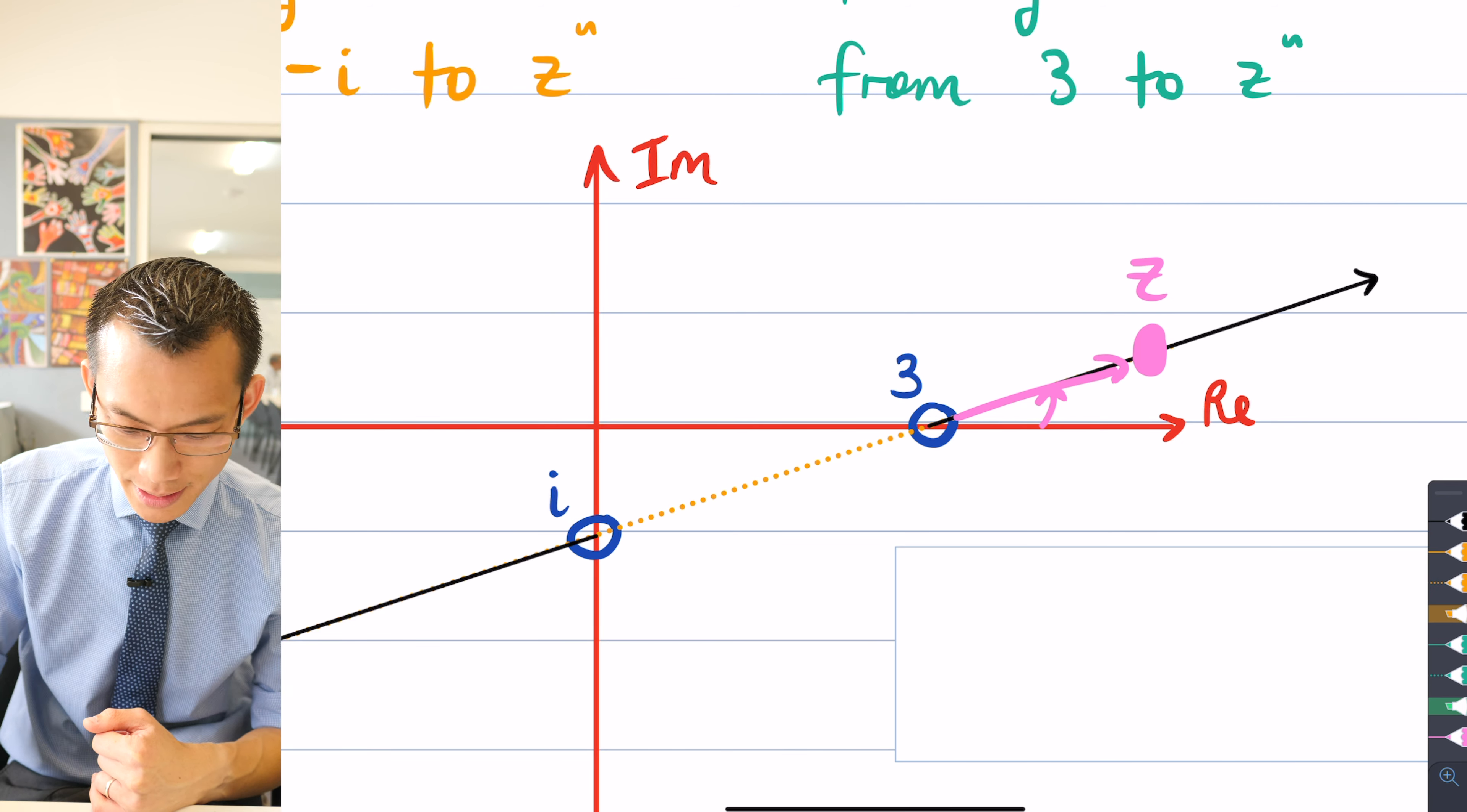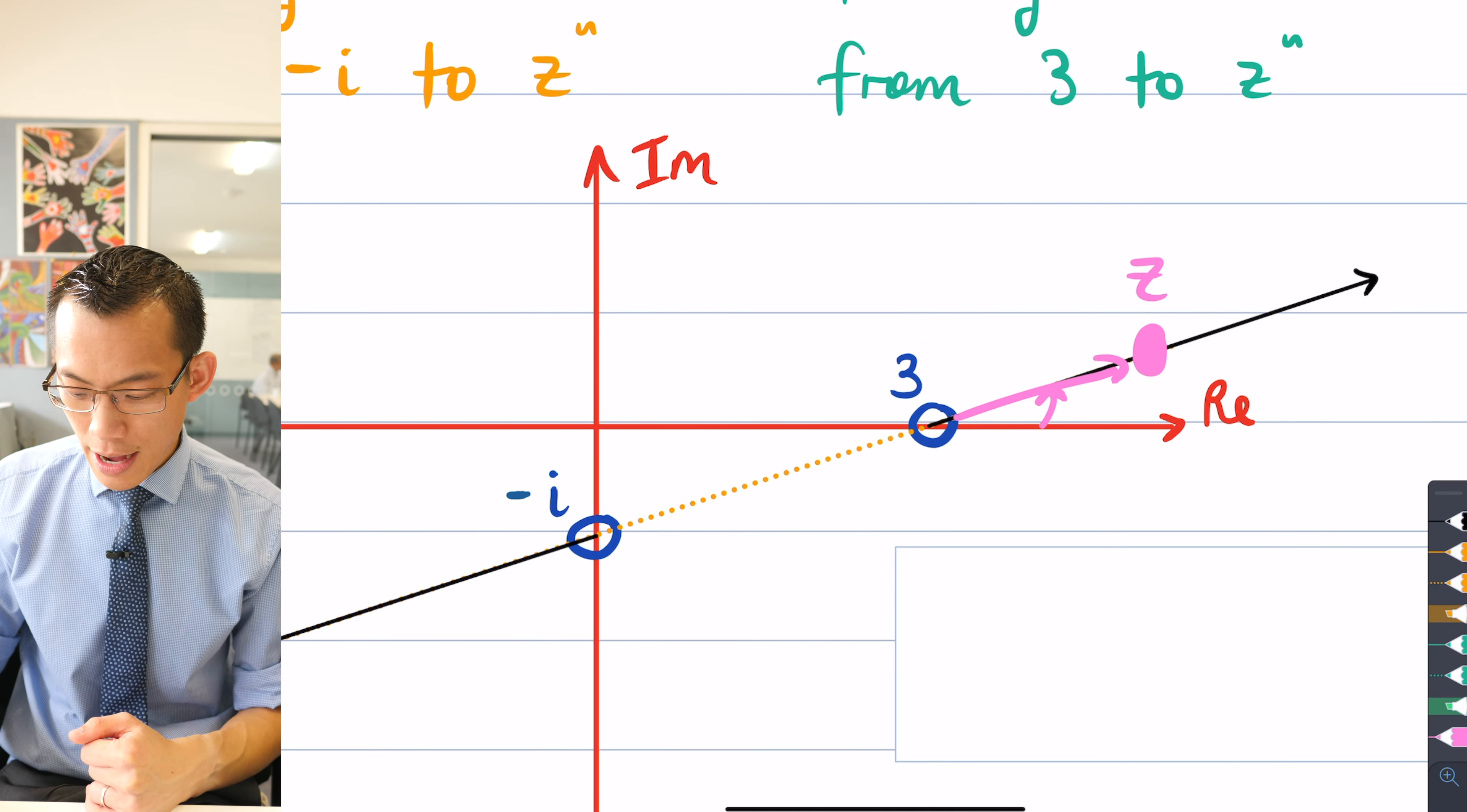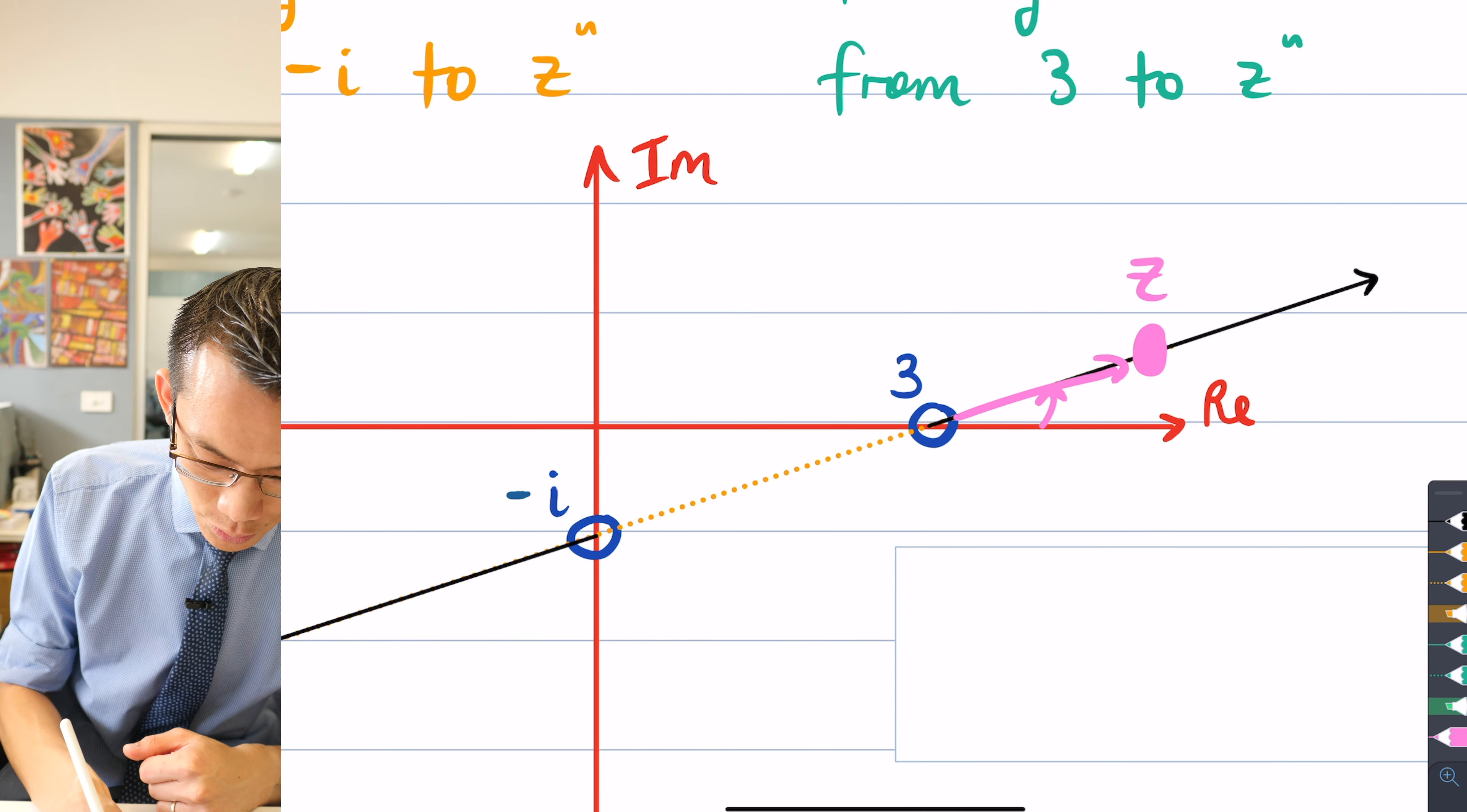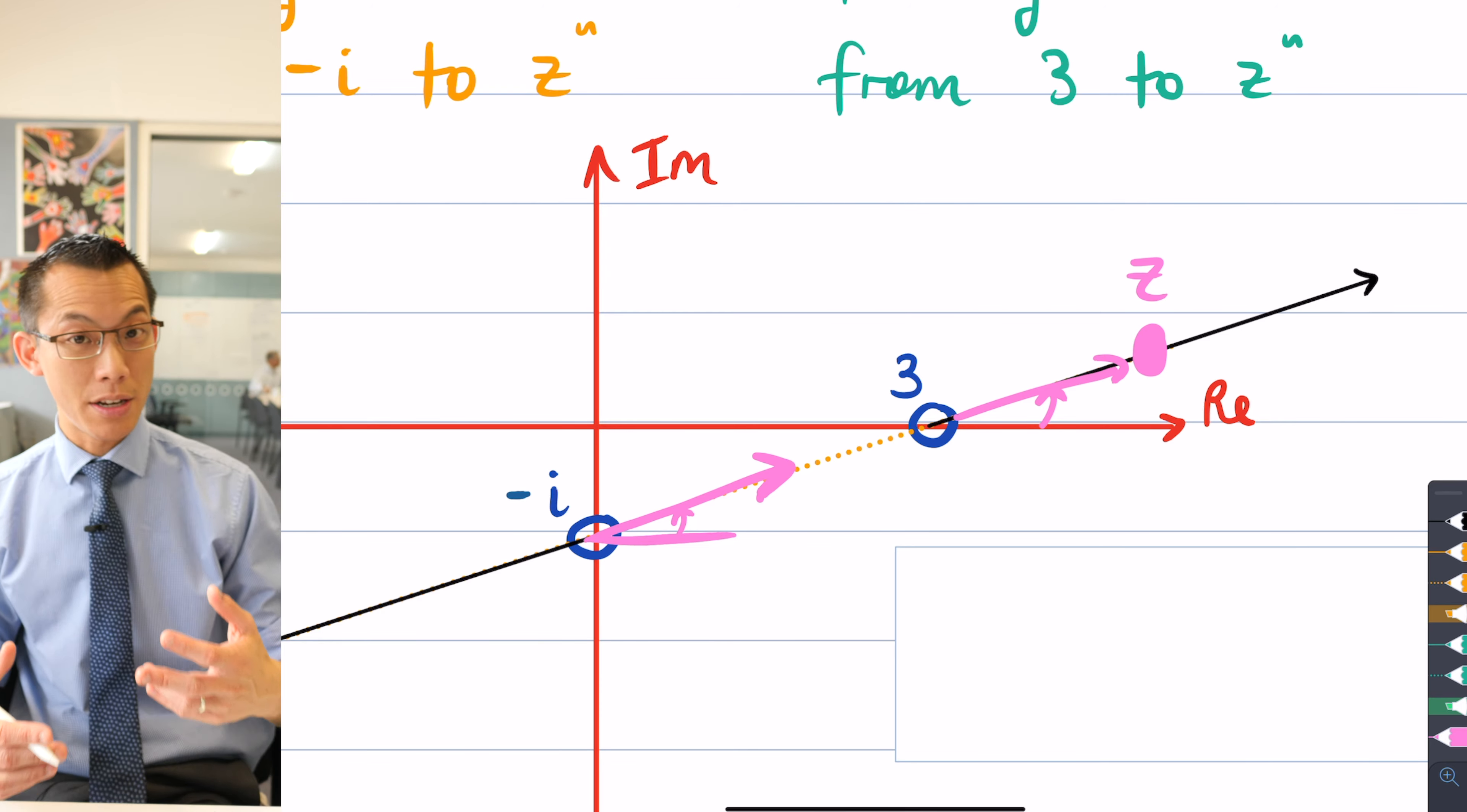It'll be this little angle here. And if you have to think about the argument from negative i, let's fix that, there we go. If we again have a look at the argument from that point as you're headed up, if you aimed properly that would help, on the same line and you measure from the same positive real direction.